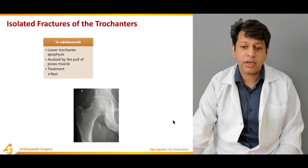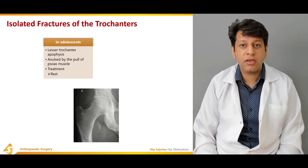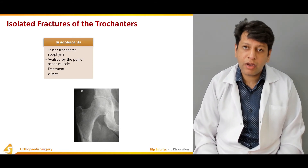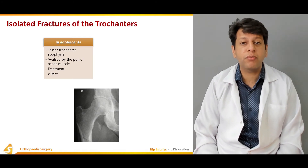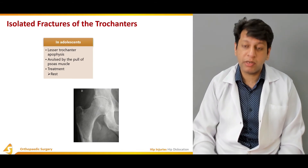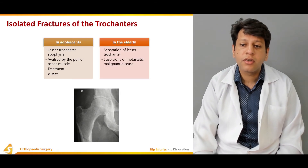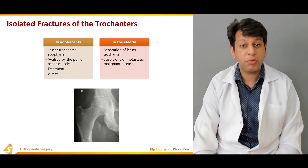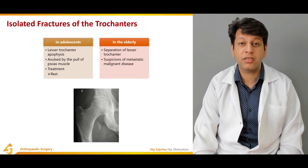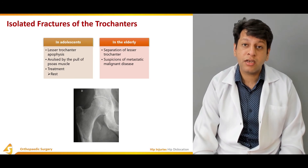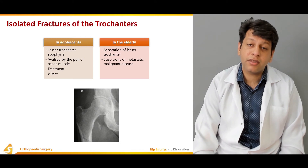In adolescents, the lesser trochanteric apophysis can be avulsed by the pull of the iliopsoas muscle, which attaches there. During forceful hip flexion — especially during a sprint — there is always a chance the lesser trochanter can avulse from its surface. If it's a small piece, rest is sufficient. If a large piece with the whole muscle has avulsed, operative treatment may be required. In the elderly, separation of the lesser trochanter is suspicious for metastatic malignant disease, such as a chondrosarcoma, and must always be evaluated accordingly.